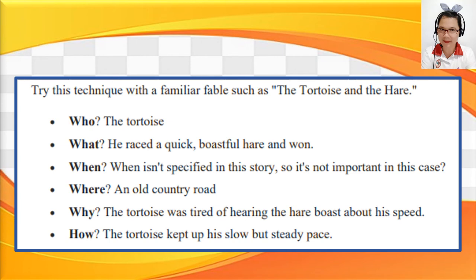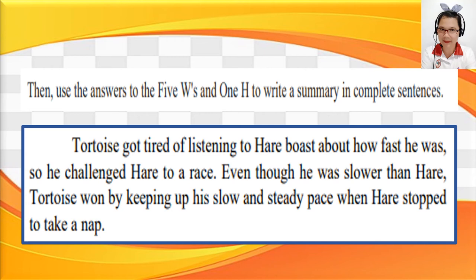Let's try this technique with The Hare and the Tortoise. Who? The tortoise. What? He raced a quick, boastful hare and won. When? One day — it was not clearly stated. Where? Maybe in the forest or an old country road. Why? The tortoise was tired of hearing the hare boast about his speed. How? The tortoise kept up his slow but steady pace. Summary: Tortoise got tired of listening to hare boast about how fast he was, so he challenged hare to a race. Even though he was slower, tortoise won by keeping up his slow and steady pace when hare stopped to take a nap.